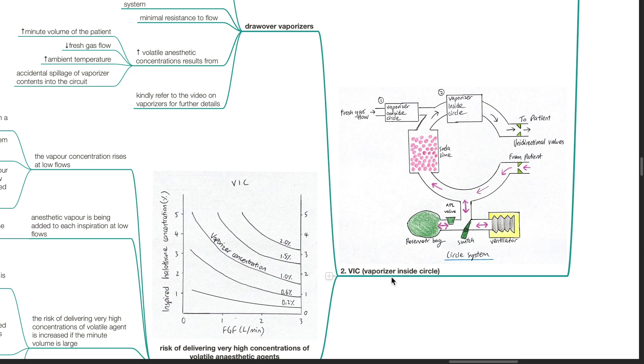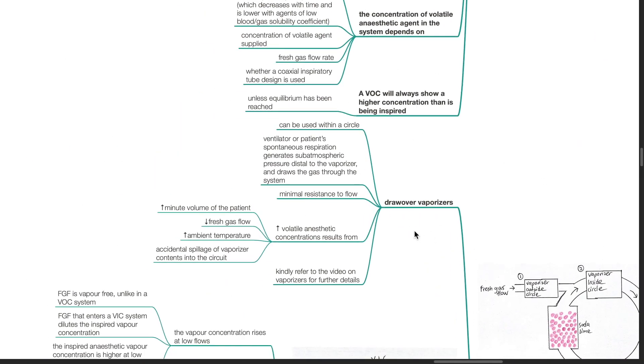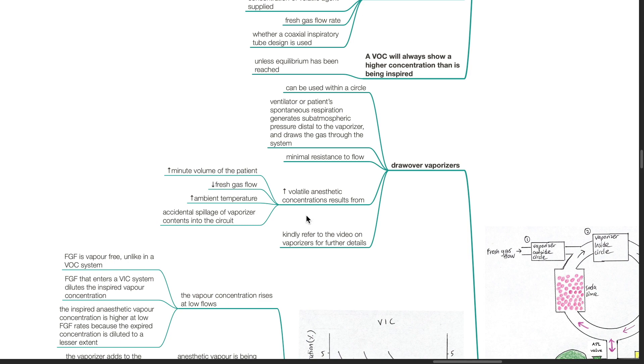Vaporizer inside circle (VIC). Draw-over vaporizers can be used within a circle. The ventilator or patient's spontaneous respiration generates sub-atmospheric pressure distal to the vaporizer and draws gas through the system. These vaporizers have minimal resistance to flow. Increased volatile anesthetic concentrations result from increased minute volume of the patient, decreased fresh gas flow, increased ambient temperature, and accidental spillage of vaporizer contents into the circuit. Kindly refer to the video on vaporizers for further details.